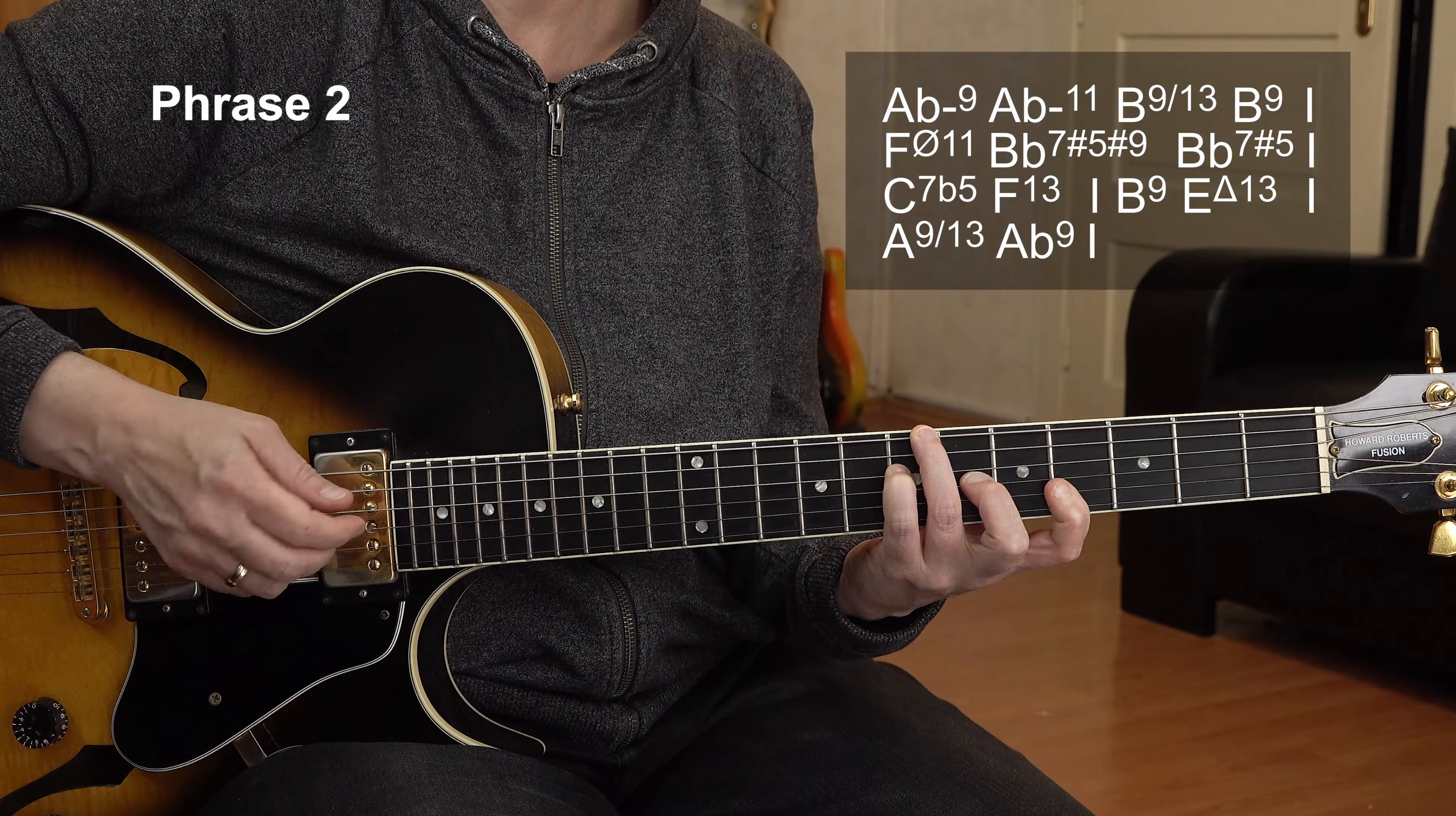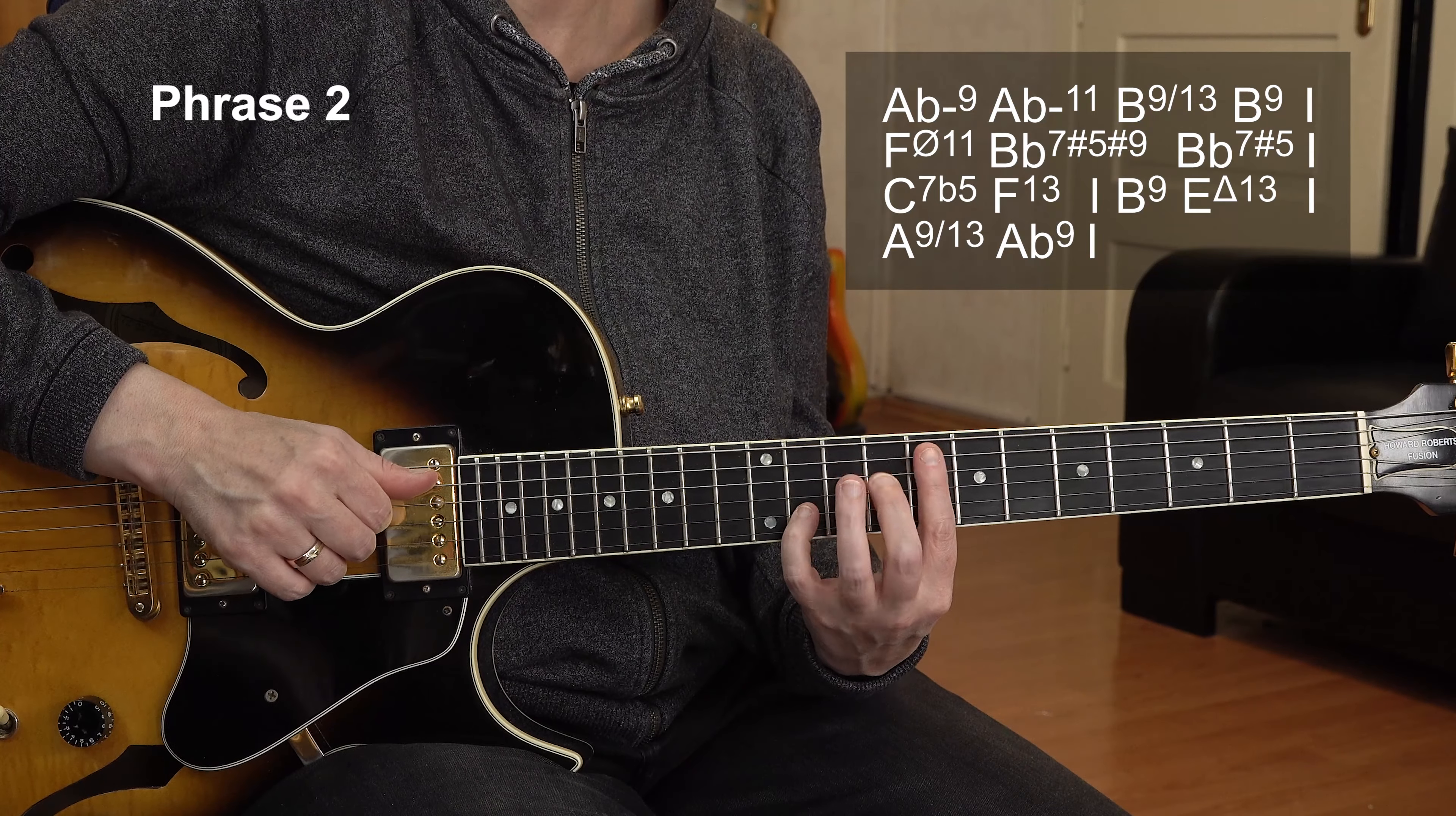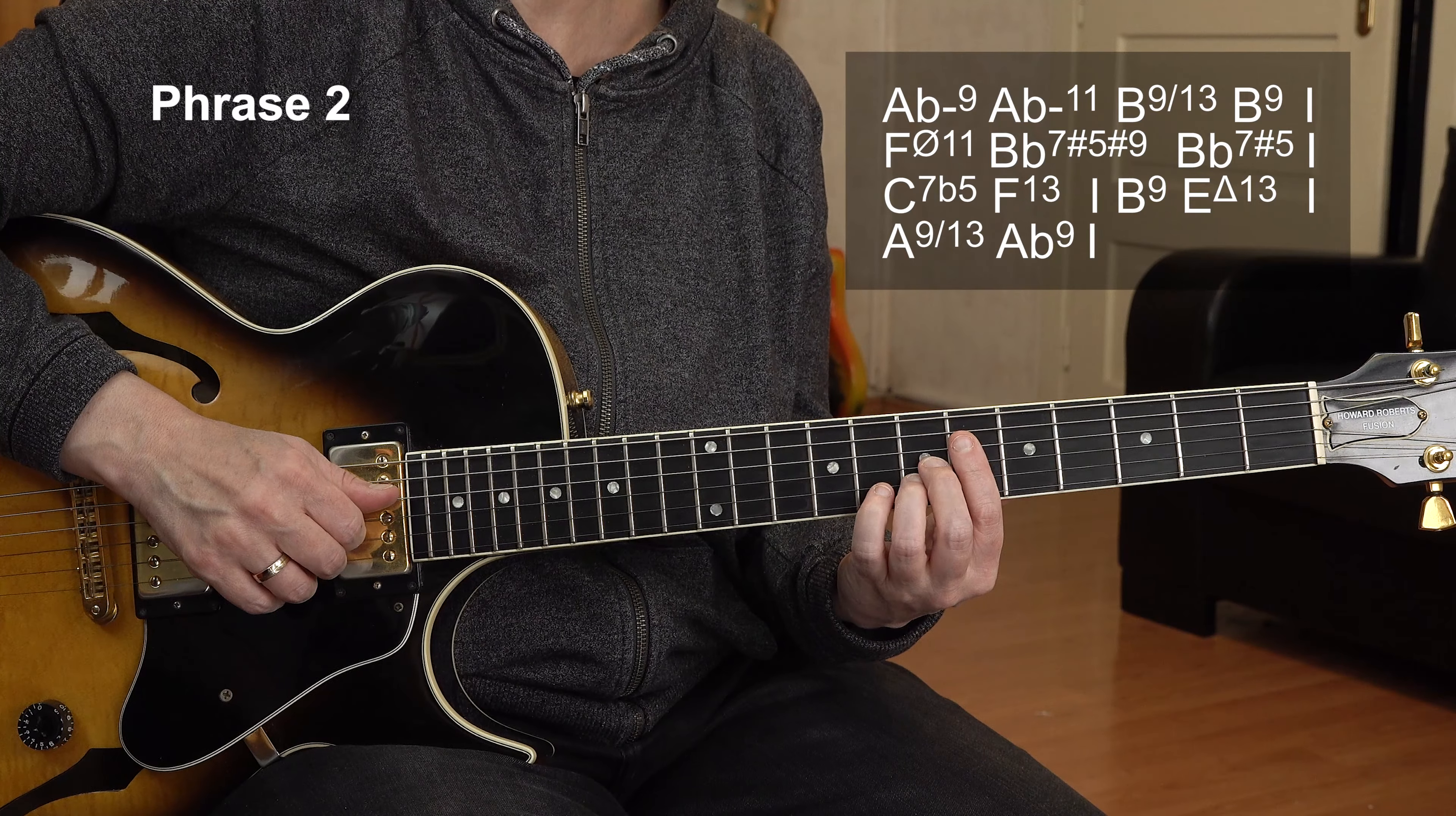And now we have a B9 13 again. We had this before. And now we go into this B9. Middle finger slides the melody. F half diminished now. With the 11th on top actually. So that's F half diminished 11. Bridge over to the E flat on top, next melody tone.